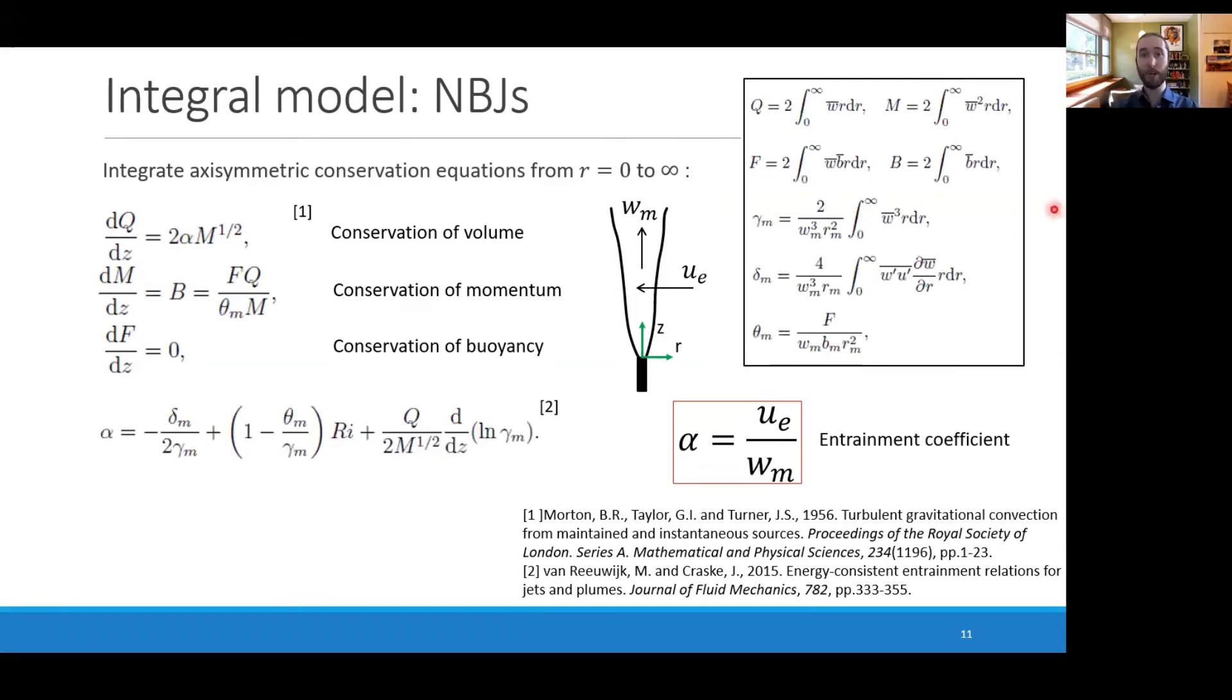These terms are defined in this corner, but in summary, the first term of the expression reflects the ratio of turbulence production to mean kinetic energy, that is, the effect that turbulence has on entrainment. The second term reflects the effect of buoyancy on entrainment through the local Richardson number. The local Richardson number is the inverse square of the Froude number, that is, the ratio of buoyancy to momentum.